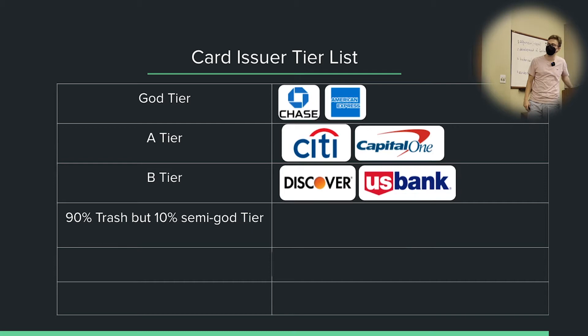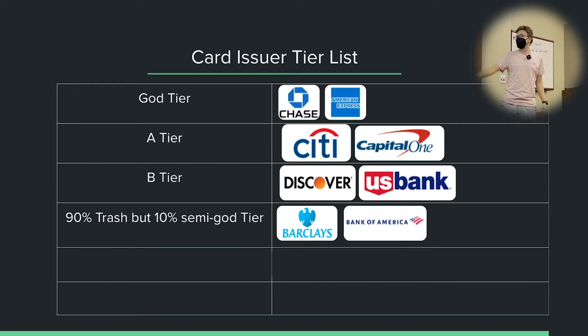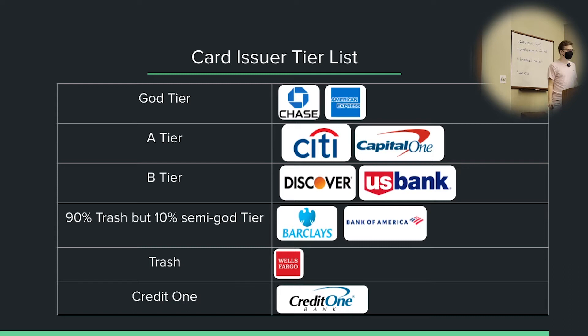At a kind of interesting tier — 90% trash but 10% semi-god tier, where some cards are suspiciously good but most are uninteresting — we have Barclays Bank and Bank of America. There's one card from Barclays and one or two from Bank of America that are actually really good, but other than that, nothing interesting. In trash tier we have Wells Fargo. And in its own tier at the very bottom, we have Credit One.